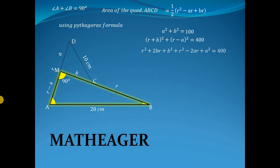Now simplifying we get r squared plus 2br minus 2ar plus a squared plus b squared equals 400. But the value of a squared plus b squared is 100.